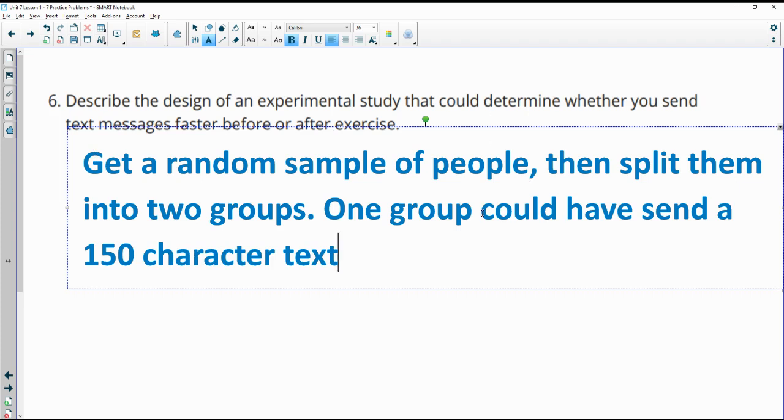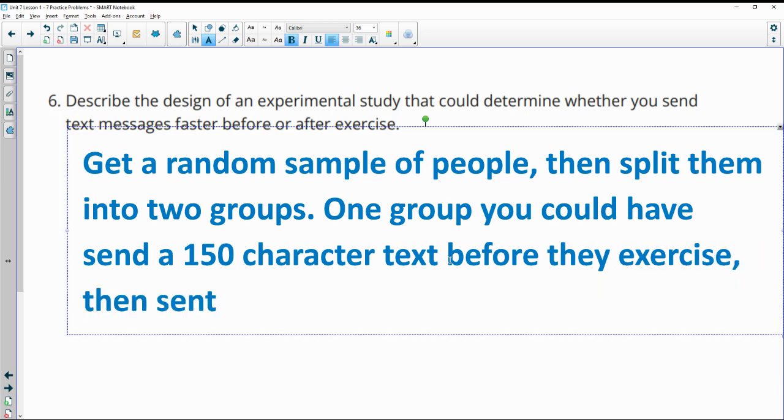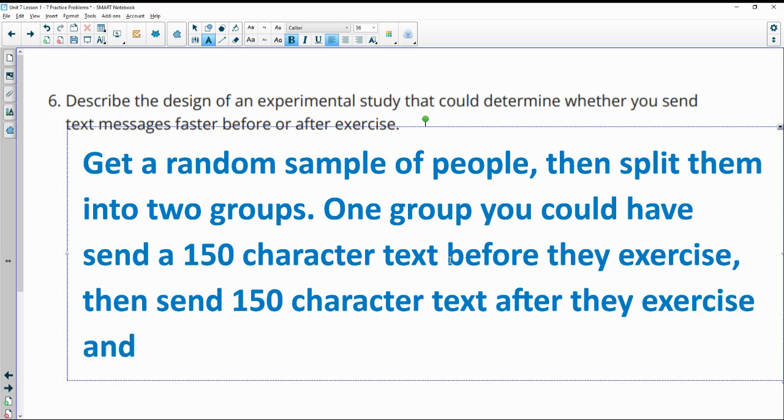So one group could have send a one hundred fifty character text before they run or play basketball or whatever. So before they work out, then send the one hundred fifty character text after they exercise and record the times.